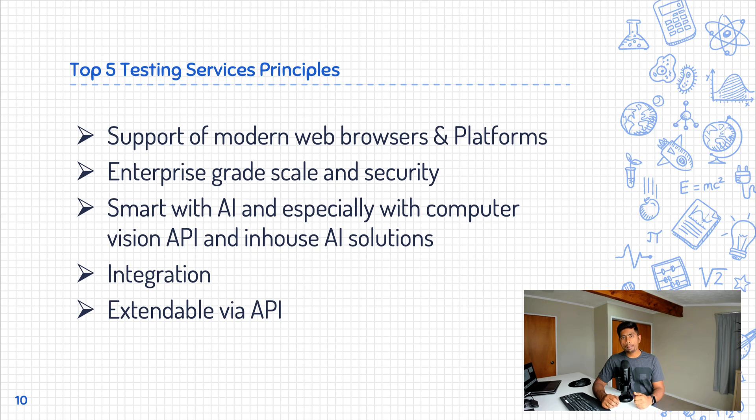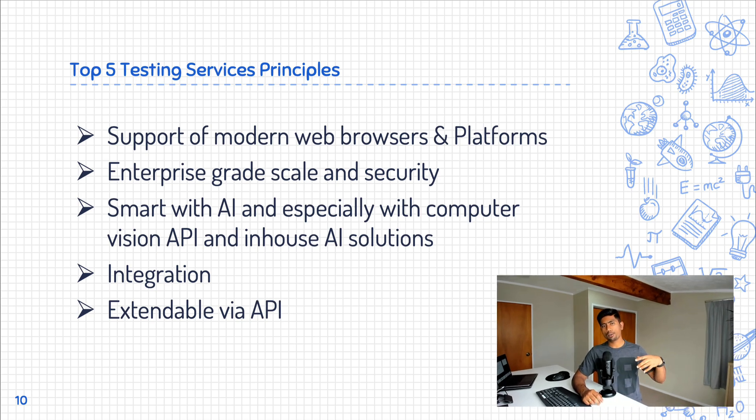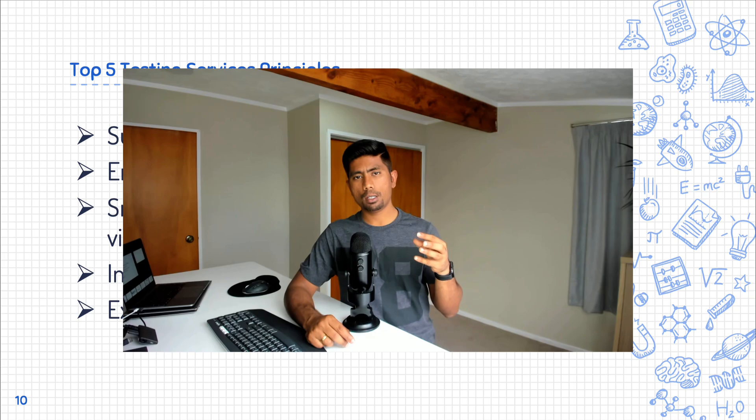Finally, extendable via APIs: these testing services sit on third-party infrastructure, so we should have the ability to control those services via an API from within our code — for example, running a test, getting a report, customizing those reports, and so on. If we want to do all these things, the service should expose an API that we can consume within our test code or development code to trigger tests, consume data, and see how everything works.